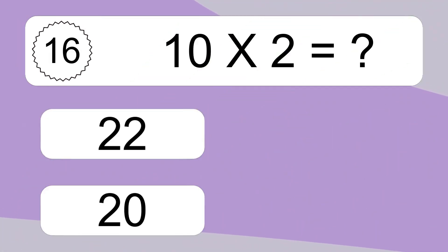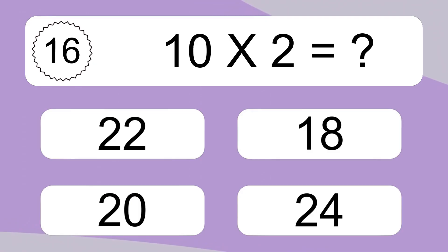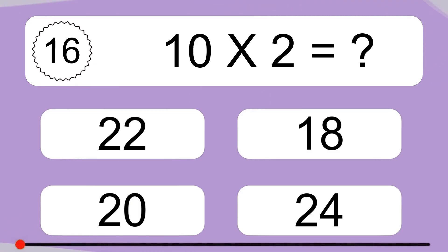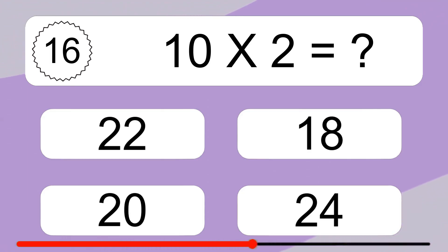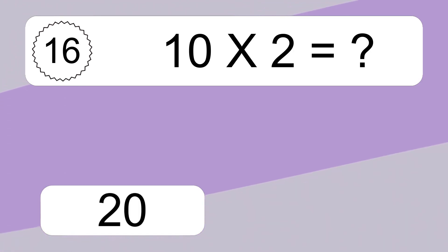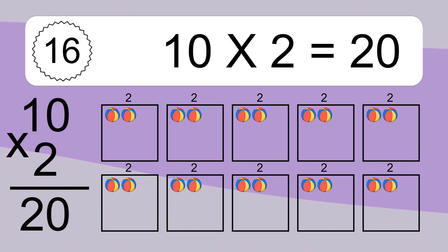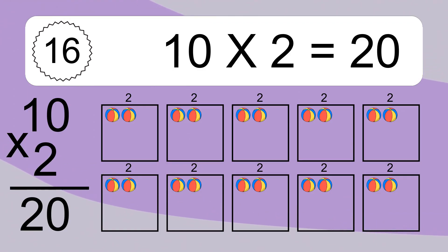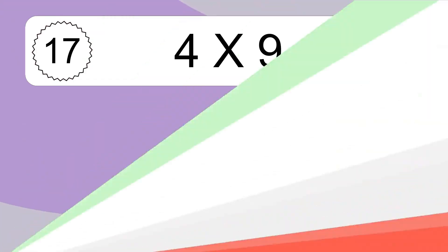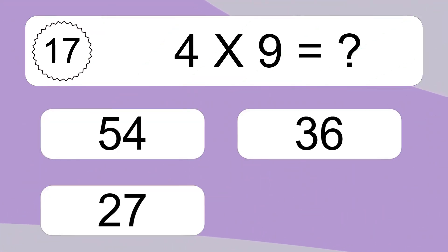10 times 2 equals what? 10 times 2 equals 20. We have 10 boxes and each box has 2 colorful balls inside. If you count all the balls in all the boxes together, you will have 10 times 2 balls. This equals 20 balls.